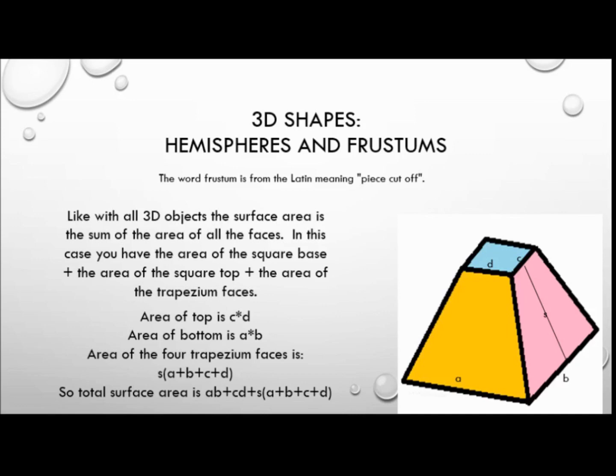In the case of a square-based pyramid frustum, we're basically looking at a square-based pyramid with the top chopped off. Like all 3D objects, the surface area is the sum of the area of all the faces. So in this case you have the area of the square base, plus the area of the square top, plus the area of the trapezium faces.